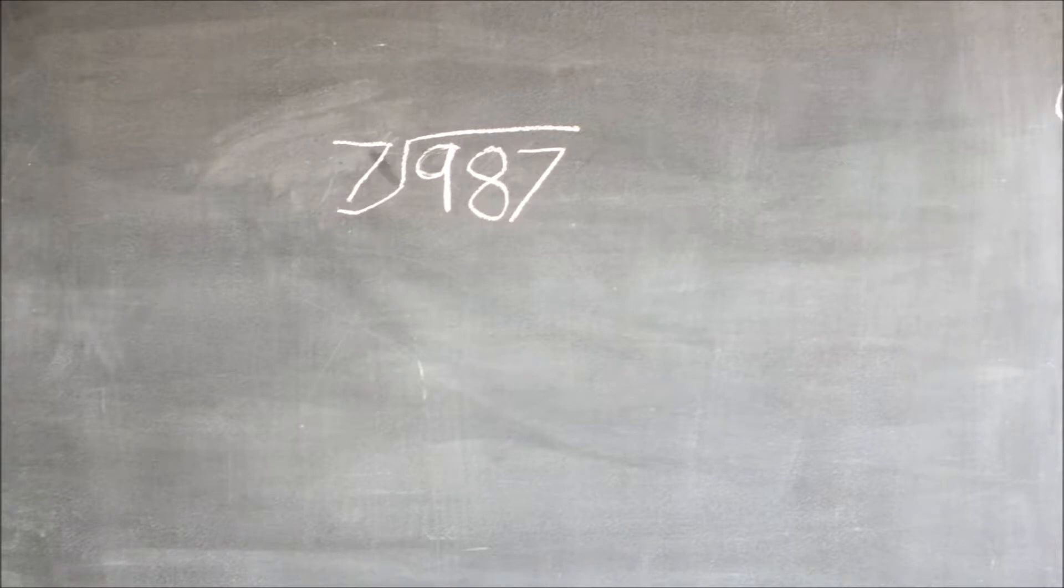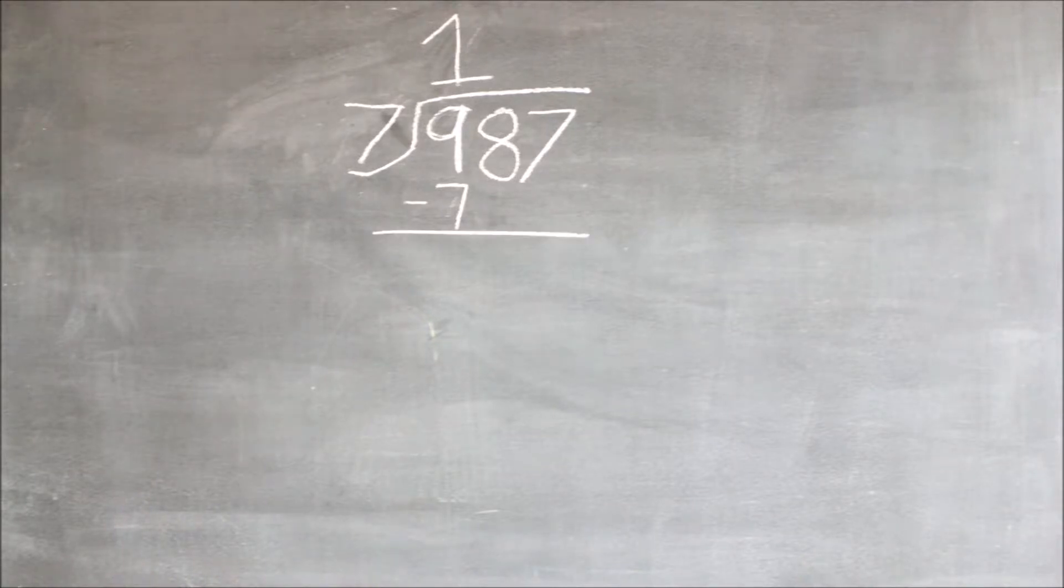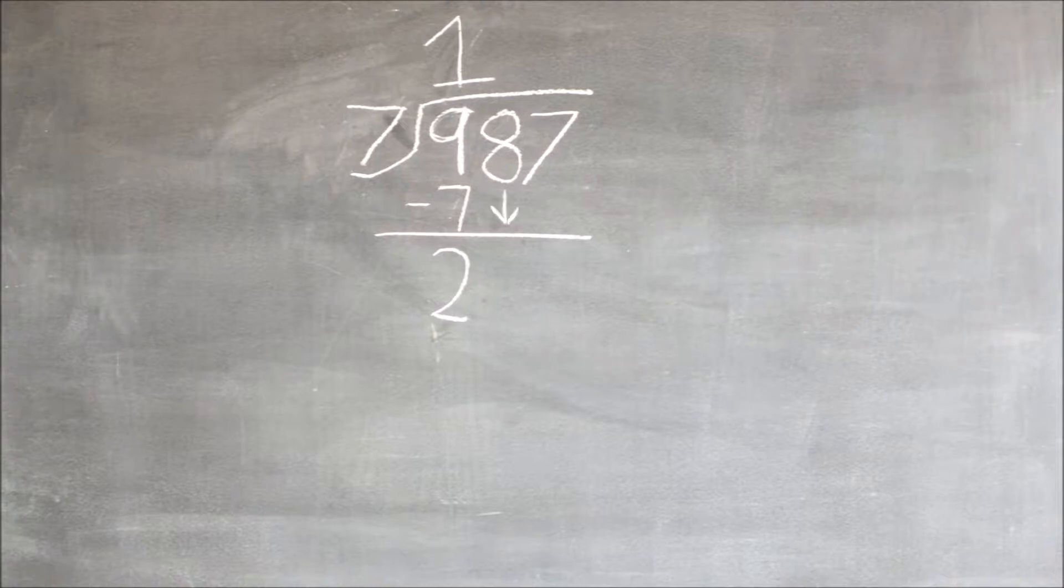Now we are going to solve a more difficult long division question. We will do the same steps as we did in the previous question. Seven only goes into nine one time, and then we do one times seven equals seven, and then we subtract nine with seven, which equals two.